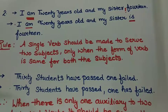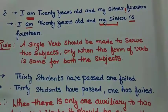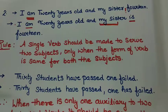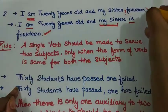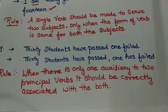Now what does this rule actually mean? The two subjects here are 'I' and 'my sister.' Both subjects cannot use the same verb because I cannot use 'is' with 'I', and I cannot use 'am' with 'my sister.' Since both subjects require different forms of the verb, I have to use two verbs. So 'I am 20 years old and my sister is 14' is the correct sentence. The rule says: a single verb should be made to serve two subjects only when the form of the verb is the same for both.